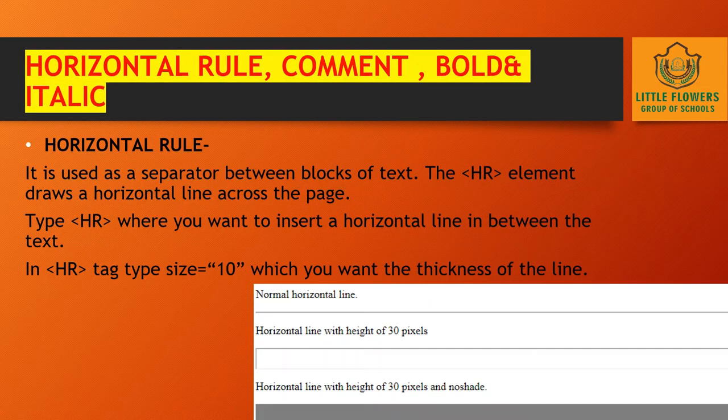Horizontal rule: it is used as a separator between blocks of text. The HR element draws a horizontal line across the page. Where you want to insert a horizontal line, you use the HR tag. You can also set the size — that is, the thickness — of the line by using size equals 10 as an attribute.